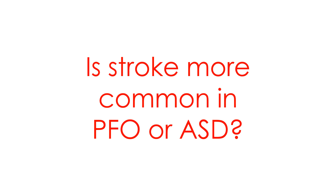Atrial septal defect is an unrestricted communication between the two atria, so that in postnatal life blood flows from the left atrium to the right atrium because of the higher compliance of the right ventricle compared to the left ventricle. Patent foramen ovale, on the other hand, is a valvular opening with hardly any flow in postnatal life. The valvular nature of the opening prevents flow due to the higher left atrial pressure which keeps the opening closed. But in certain phases of Valsalva-like strain, the valvular patent foramen ovale opens up, allowing shunting from the right atrium to the left atrium. This phasic shunt can allow a critically timed embolus to travel from the systemic venous side to the systemic arterial side, potentially leading to ischemic stroke. Hence, theoretically, stroke due to paradoxical embolism is more likely to occur with a patent foramen ovale than an atrial septal defect.